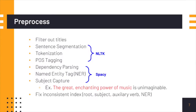In preprocessing, we will first filter out titles because they're not useful in question generation. We will then segment the articles into sentences and tokens. We would keep the POS tags, dependency parsing, and named entity tags.